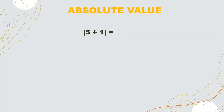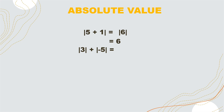Let us have this example. We have the absolute value of 5 plus 1. In this case, we will add 5 and 1, which is 6. We have the absolute value sign, so the absolute value of 6 is equal to positive 6. Next, we have the absolute value of 3 plus the absolute value of negative 5. The absolute value of positive 3 is positive 3, and the absolute value of negative 5 is positive 5. So 3 plus 5 is equal to positive 8.